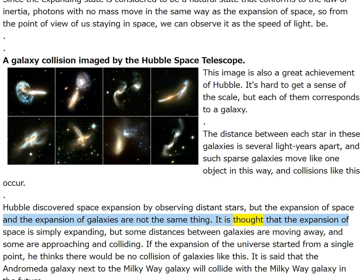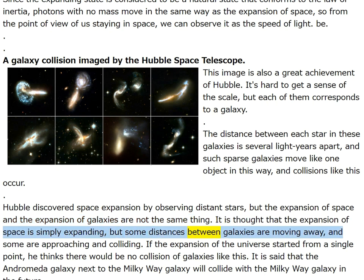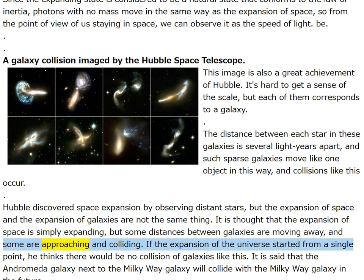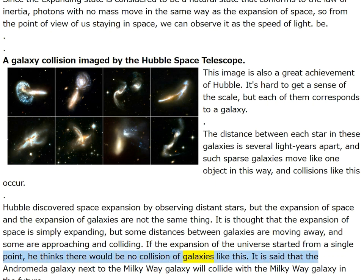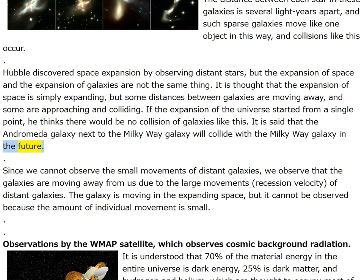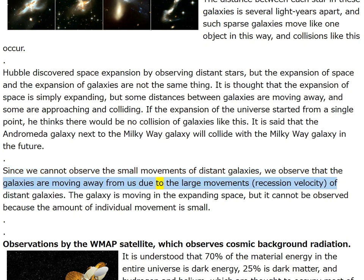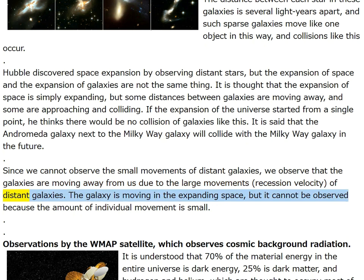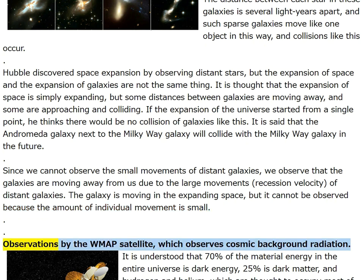If the expansion of the universe started from a single point, there would be no galaxy collisions. The Andromeda galaxy will collide with the Milky Way in the future. Since we cannot observe the small movements of distant galaxies, we observe that galaxies are moving away due to the large recession velocity of distant galaxies. The galaxy moves in expanding space, but individual movements are small. Observations by the WMAP satellite show that 70% of material energy in the universe is dark energy, 25% is dark matter, and hydrogen and helium account for only about 5%.